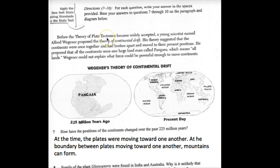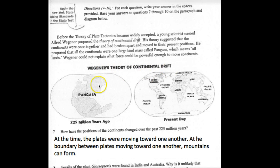Moving on, questions 7 through 10 are based on the following paragraph and diagram. Before the theory of plate tectonics became widely accepted, a young scientist named Alfred Wegener proposed the theory of continental drift. His theory suggested that continents were once together and had broken apart and moved to their present positions. He proposed that all the continents were once a large land mass called Pangea, which means 'all lands.' Wegener could not explain what force could be powerful enough to move the continents. Here's a picture showing Pangea millions of years ago, and then present day.